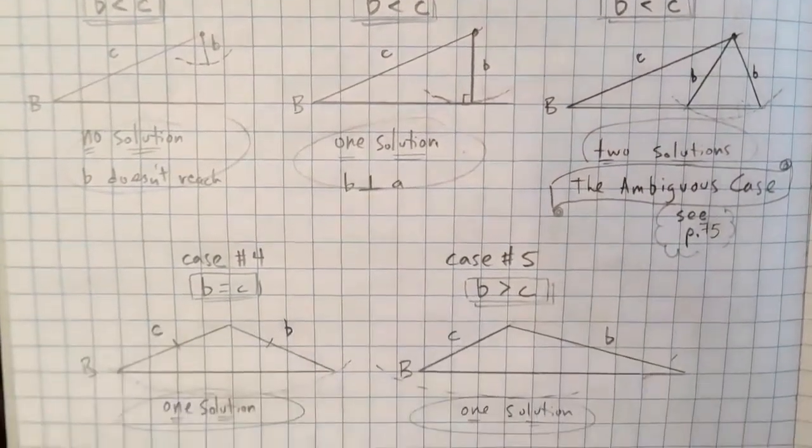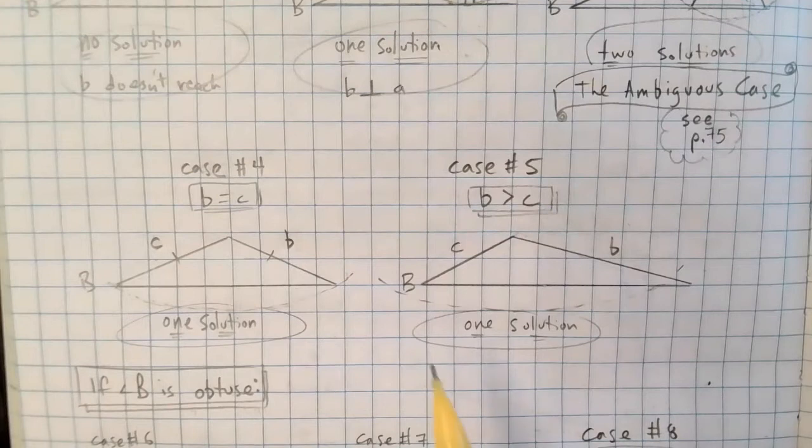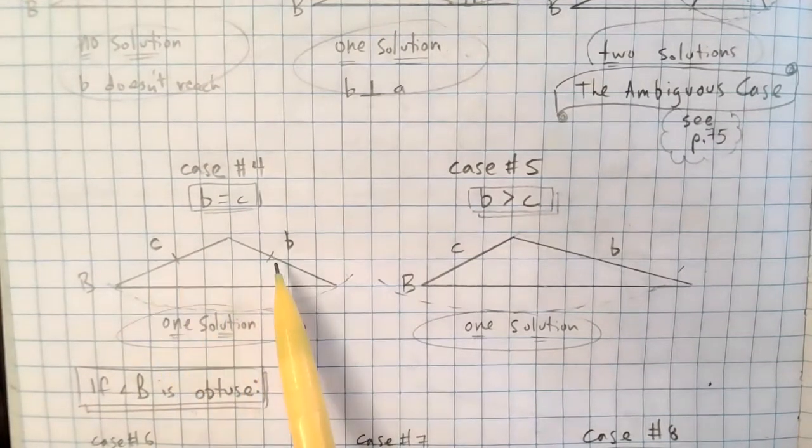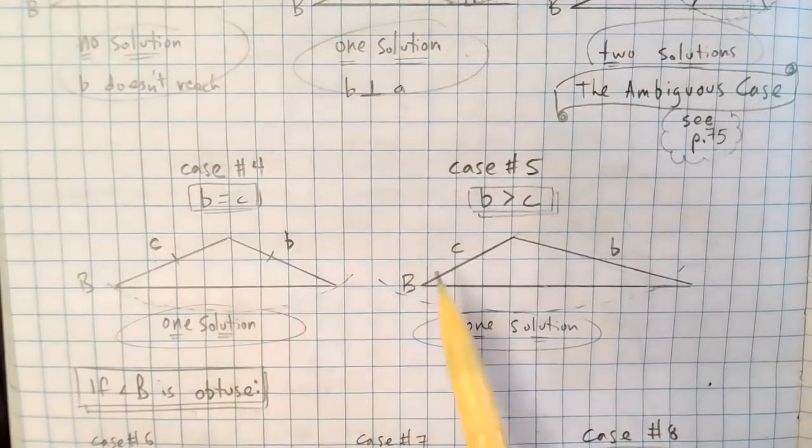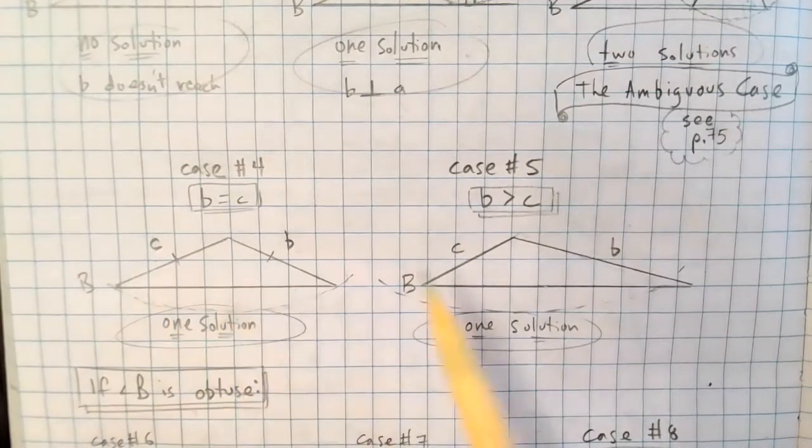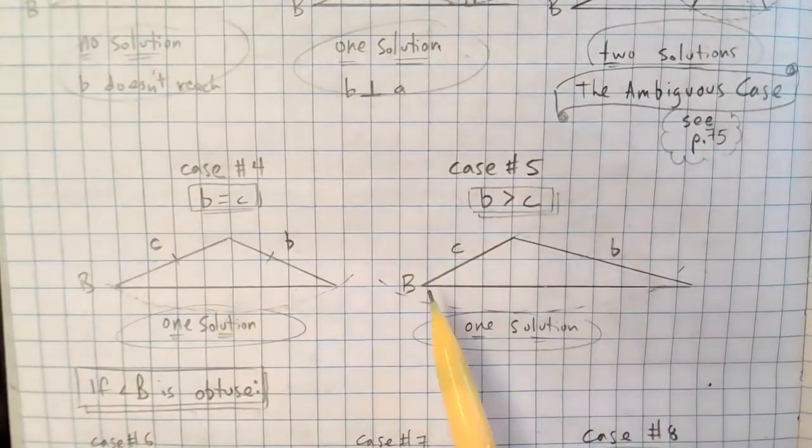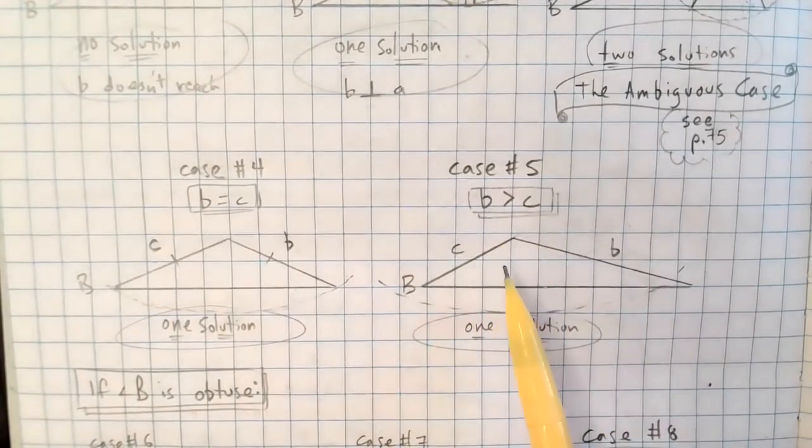Case 4 and 5, a little more straightforward. If these two sides are given, this will be an isosceles triangle. You can use the law of sines pretty straightforwardly. And same thing if b is greater than c. This will just create this obtuse triangle here. Not so hard to work with. Use the law of sines to your heart's content.